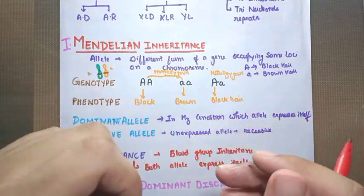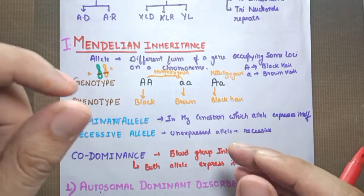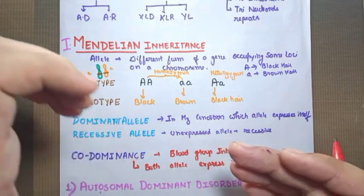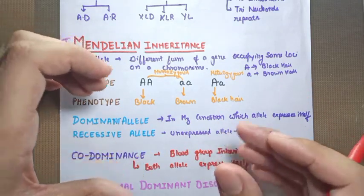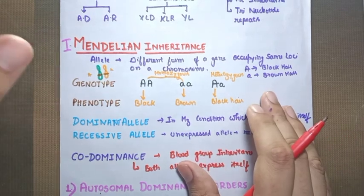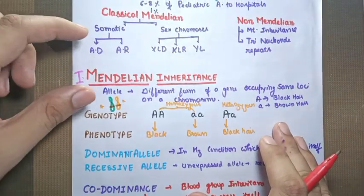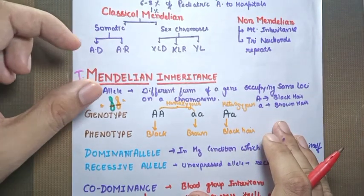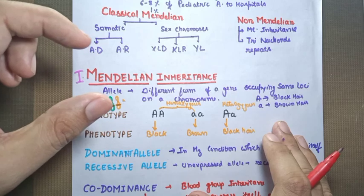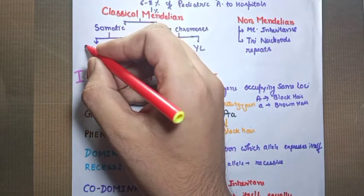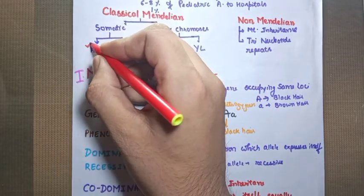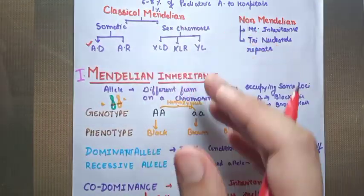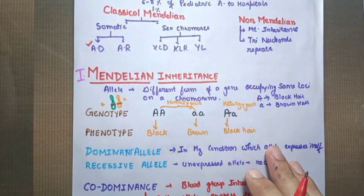This is against Mendel's general modes of inheritance. Changes in genetic constitution or single gene defects in Mendelian inheritance can be of two types: in autosomes or in sex chromosomes. We will first talk about somatic changes, which may be autosomal dominant or autosomal recessive, then proceed to sex chromosomes.